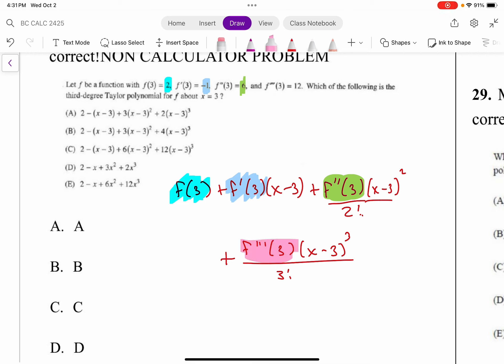So what do we get? We get 2 plus f'(3) is -1, so I get -1(x-3). f''(3) is 6, why don't we do a little simplifying because it's all simplified in the answer choices. That's 6 over 2 which is 3(x-3)².